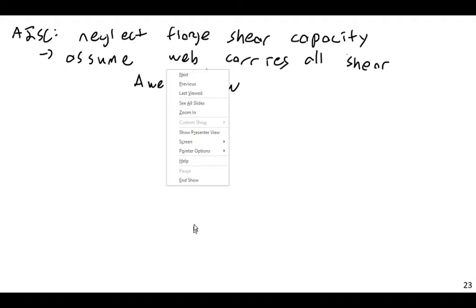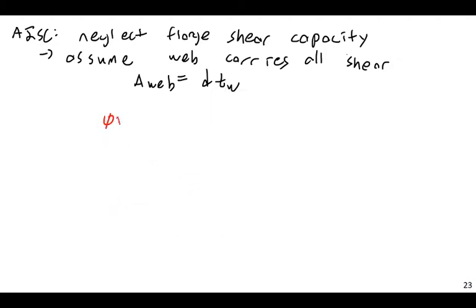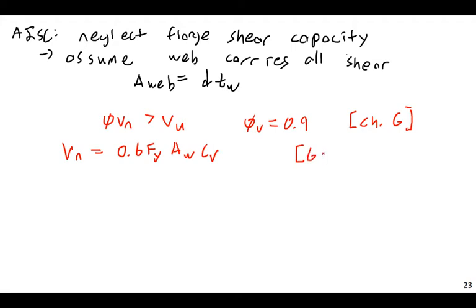And the code approach here is going to be phi VN must be greater than V ultimate, the ultimate shear, and phi V, the phi for shear, is going to be 0.9. And this is found in chapter G of the code. And the equation for VN is going to be 0.6 times Fy times the area of the web times a factor called CV. And this is equation G2-1. Now this is really it. This is really the only equation you need to use. At least for most shapes, this is it.